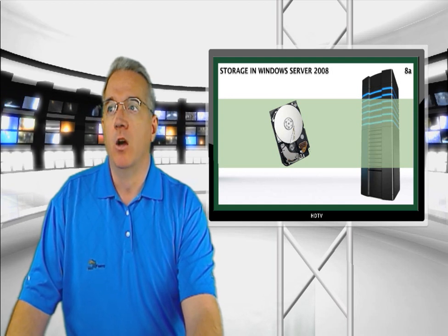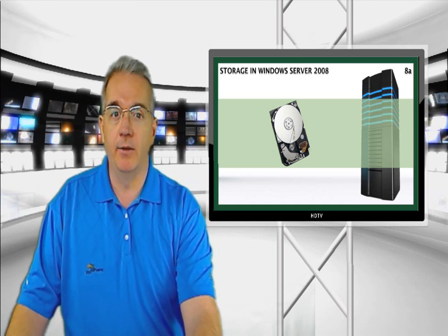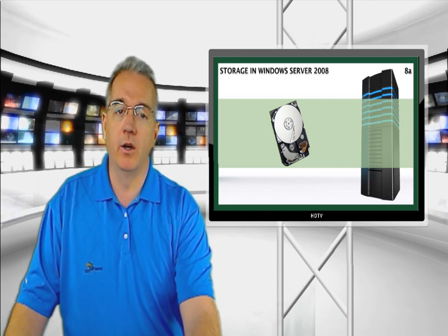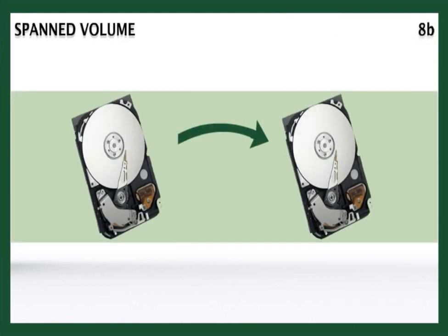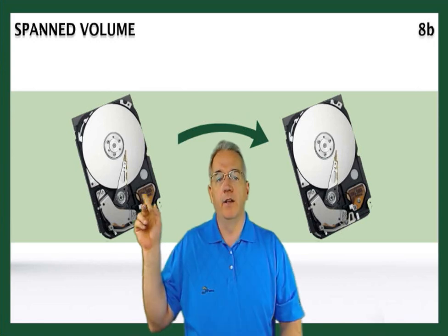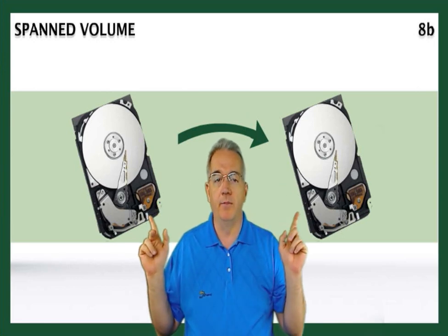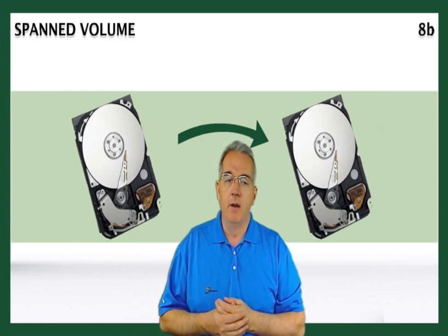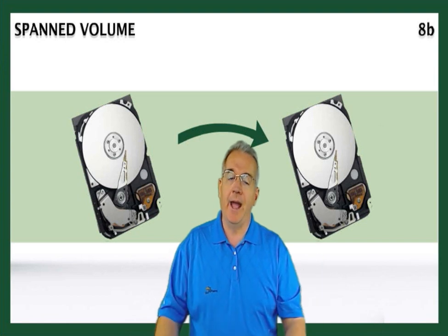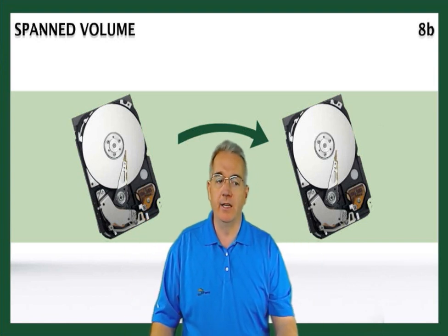Let's say we've configured our drive to hold everything and then we run out of space. One of the drive types we can configure is called a span volume. What a span volume does is create a sort of cascade effect — when I fill up one drive, it'll flow over and start filling up the other drive. It doesn't give you any speed advantage or disadvantage, but it does extend your capacity for storage.